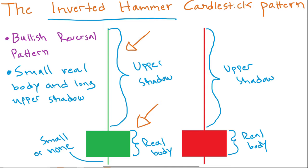The inverted hammer can actually be both green and red. The green one is a bit more bullish, so if you're looking for a trend reversal the green one is preferable, but the candle can be both green and red. The red one might feel weird because it doesn't look that bullish, but since the bulls are pushing the price very high during the day, it is still an indication that the downtrend might end and that we might be seeing a bullish reversal to the upside.